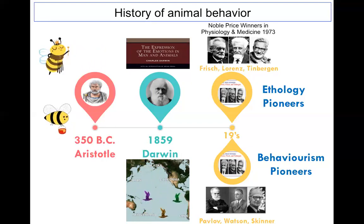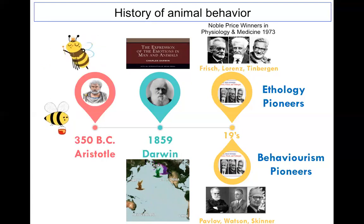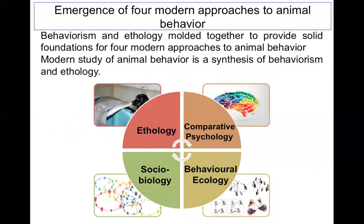Combining these approaches from ethology and behaviorism resulted in four modern approaches to animal behavior. Behaviorism and ecology molded together to provide a solid foundation for these four modern approaches. The four approaches are: ethology, comparative psychology, sociobiology, and behavioral ecology.